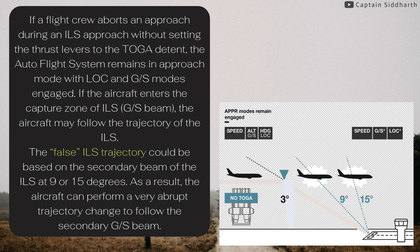If a flight crew aborts an approach during an ILS approach without setting the thrust levers to the TOGA detent, the auto flight system remains in approach mode with LOC and GS modes engaged. If the aircraft enters the capture zone of the ILS, the aircraft may follow the trajectory of the ILS. The false ILS trajectory could be based on the secondary beam of the ILS at 9 or 15 degrees. As a result, the aircraft can perform a very abrupt trajectory change to follow the secondary GS beam.